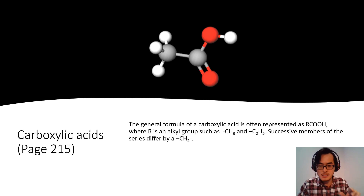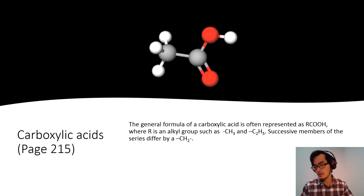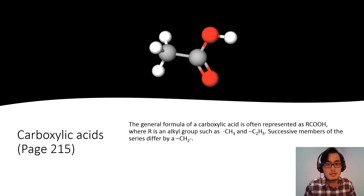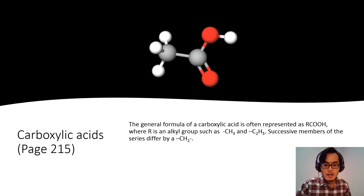The structure follows the general formula RCOOH — towards the right of the diagram is COOH, and towards the left is R, so the number of carbons can change. If it's one carbon, we have HCOOH, and the name for it is methanoic acid. Two carbons is ethanoic acid, three carbons is propanoic acid.